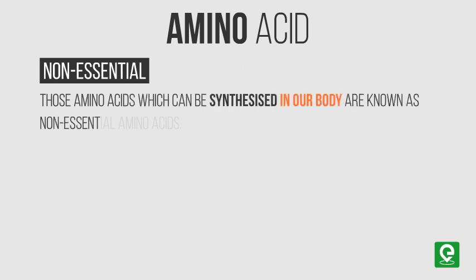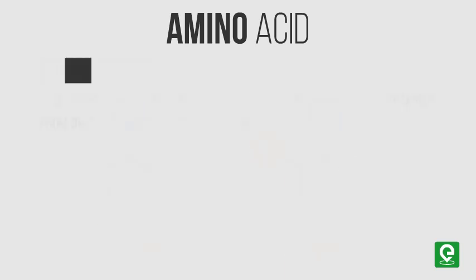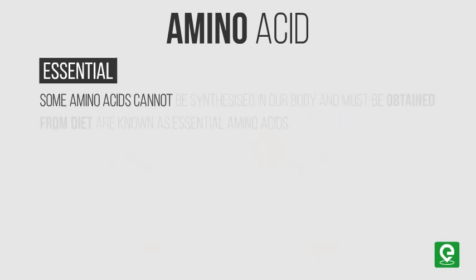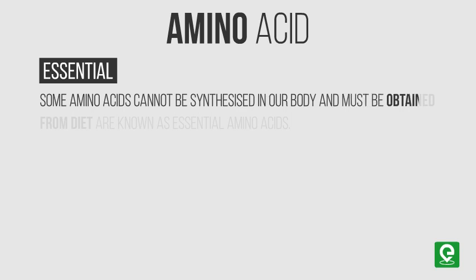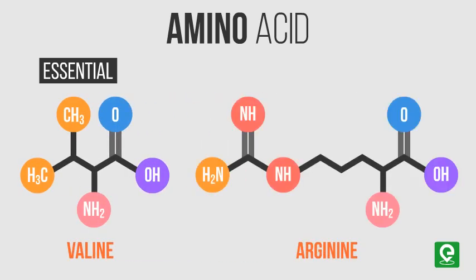Amino acids may be essential or non-essential. Those amino acids which can be synthesized in our body are known as non-essential amino acids — for example, glycine and alanine. Amino acids that cannot be synthesized in our body and must be obtained from diet are known as essential amino acids — for example, valine and arginine.